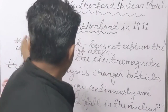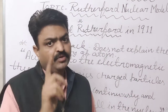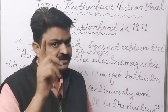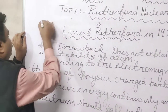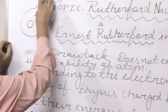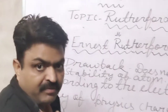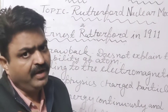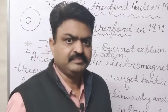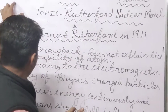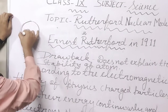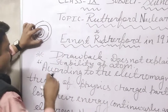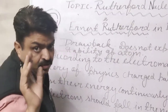The major drawback of the Rutherford model is that he did not explain the stability of the atom. He found that there is one nucleus and around the nucleus there are electrons. But those electrons, when they show motion, are accelerated. Due to that acceleration they lose their energy, and due to losing energy they may fall inside the nucleus — so their stability is not explained.